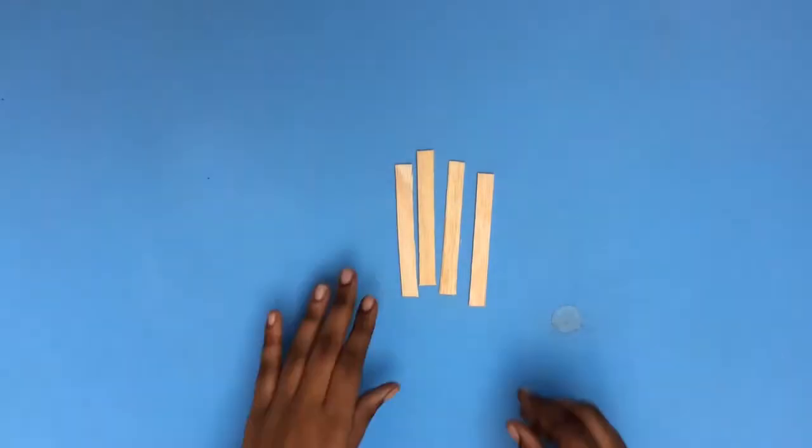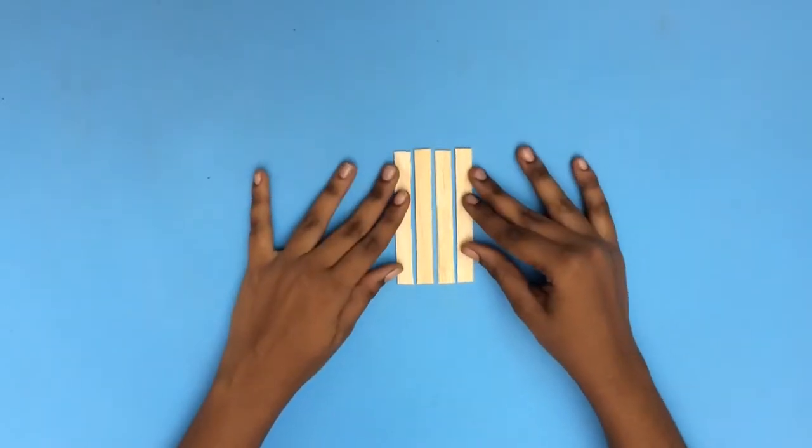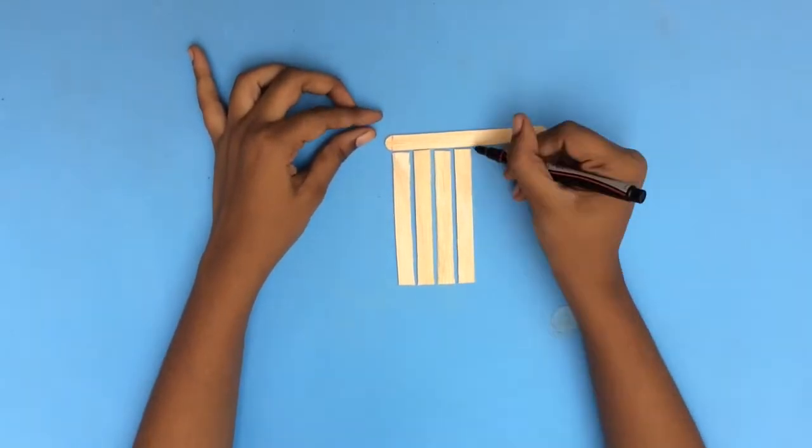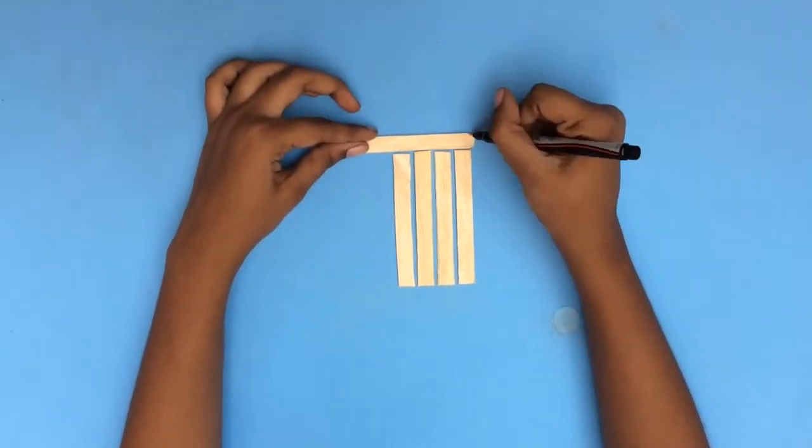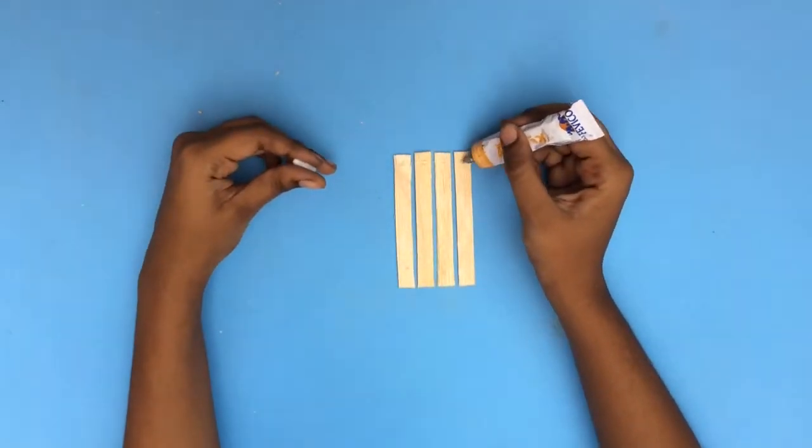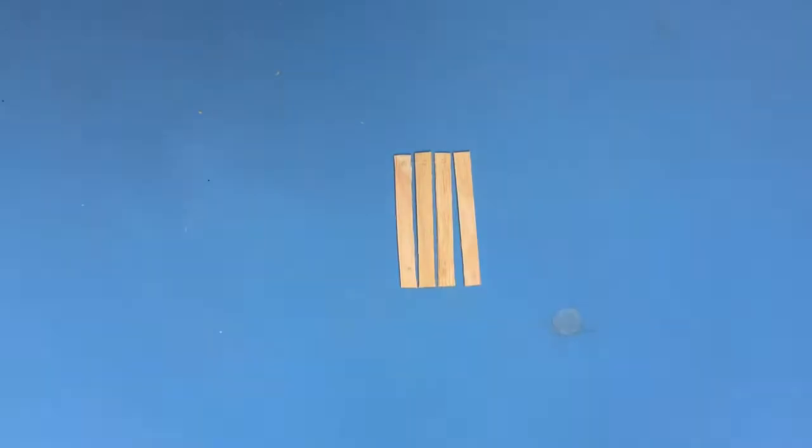For the base, first take four sticks and arrange them in a line with about 3mm gap between each of them. Take another stick and cut two pieces, each equal to the width of the base. Now stick them using any strong glue to the base.